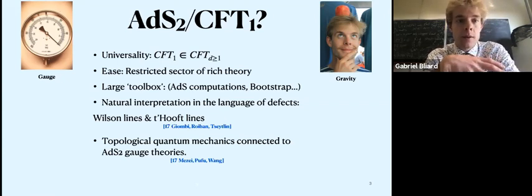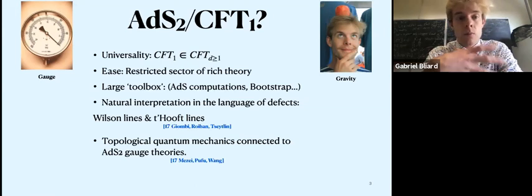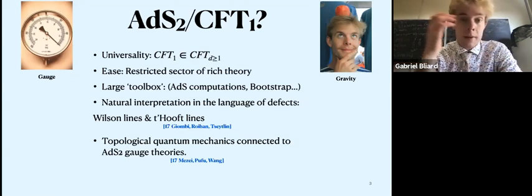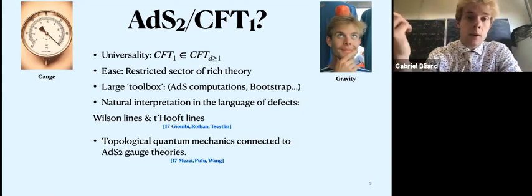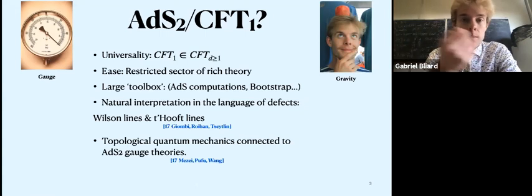Reasons for which we have this are that you have a certain universality of the problem. So in any CFTs, you're going to have a subsector that has CFT1. And then since these sectors are usually restricted sectors of the full theory, they're easier to understand, especially when you're considering rich topics such as ABJM. And also, you have a large toolbox to tackle the problem analytically, perturbatively. So using supersymmetry, using AdS computations via direct perturbation theory and bootstrap, for example.